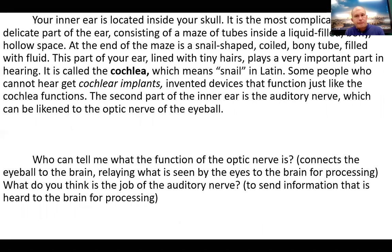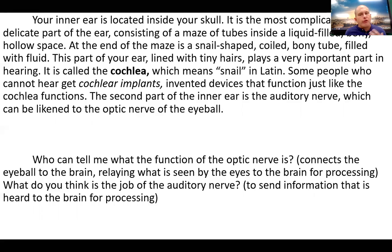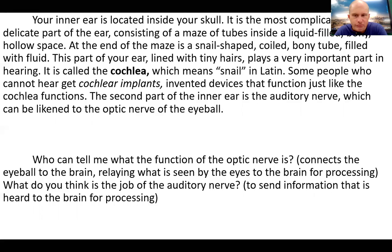Your inner ear is located inside your skull. It is the most complicated and delicate part of the ear, consisting of a maze of tubes inside a liquid-filled bony hollow space. At the end of the maze is a snail-shaped, coiled, bony tube filled with liquid. This part of your ear, lined with tiny hairs, plays a very important part in your hearing. It is called a cochlea, which means snail in Latin. Some people who cannot hear get cochlear implants — invented devices that function just like a cochlea. The second part of the inner ear is the auditory nerve, which can be likened to the optic nerve of the eyeball. The optic nerve connects the eyeball to the brain; similarly, the auditory nerve provides communication for the brain to process information.